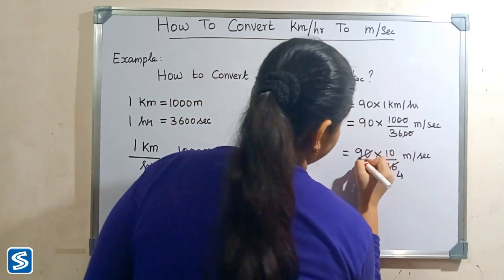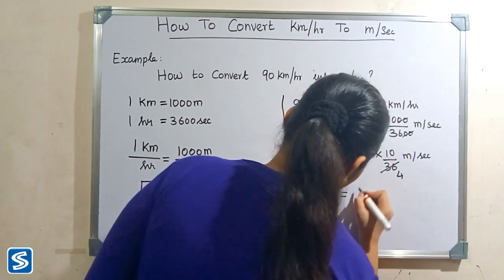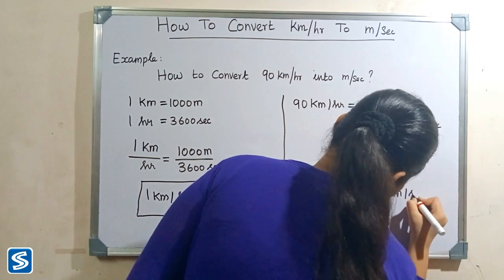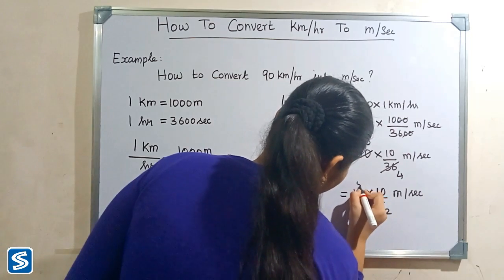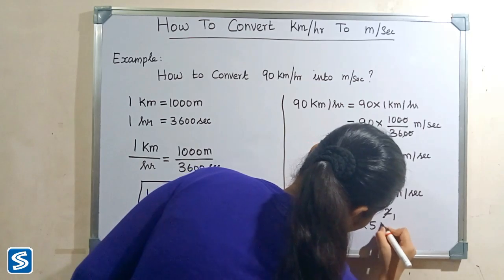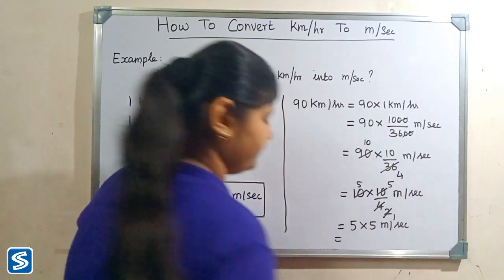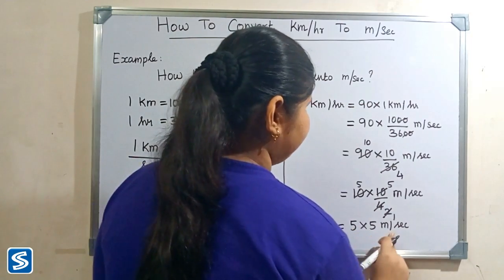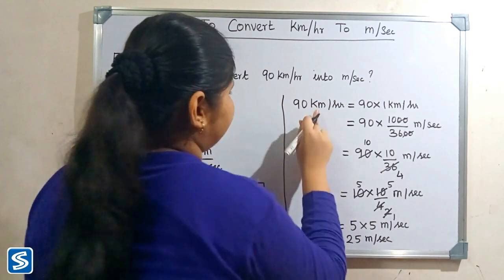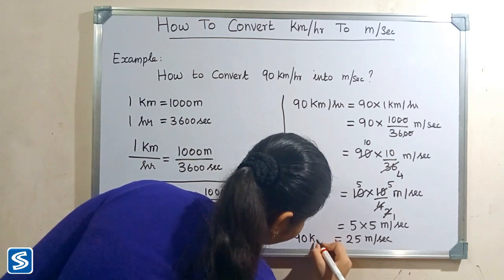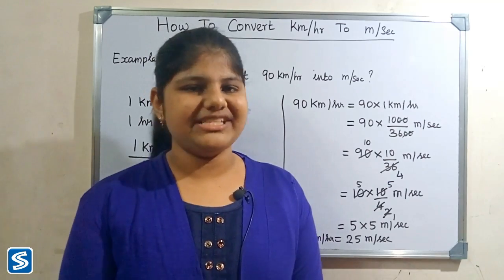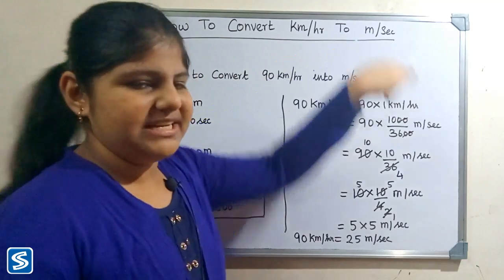9 fours are 36 and 9 tens are 90, so this becomes 10 multiplied by 10 by 4 meter per second. Further simplifying: 2 fives are 10 and 2 twos are 4, giving us 5 multiplied by 5 meter per second, which is 25 meter per second. So 90 kilometer per hour is equal to 25 meter per second.